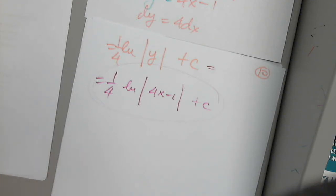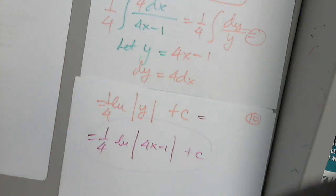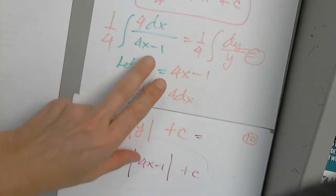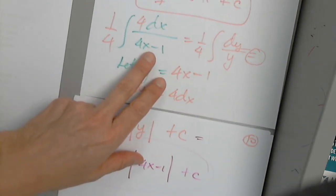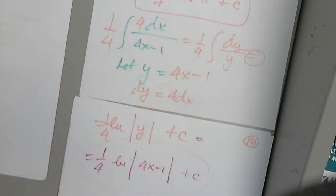How is it that it's 4x minus 1? We just chose that substitution. It depends on the problem — it may have the derivative of the denominator in the numerator. It's a very good question. I have to look at the integral to decide; I can't give a single recipe.